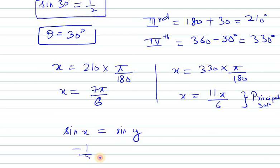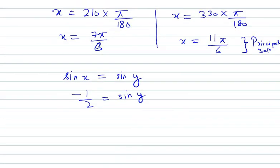So minus half equal sin y. And we know minus half is sin 7 pi by 6 from principal solution. So y is 7 pi over 6.